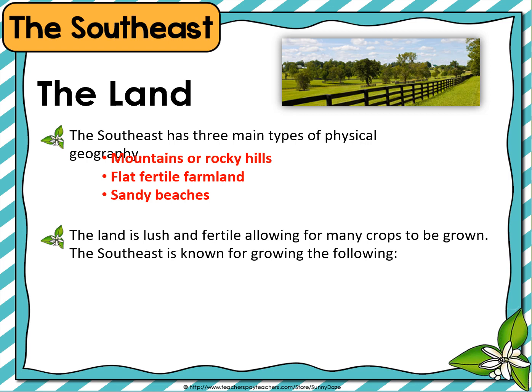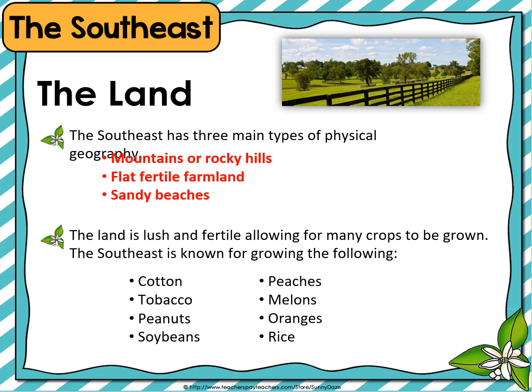The southeast is known for growing the following: cotton, tobacco, peanuts, soybeans, peaches, melons, oranges, and rice.